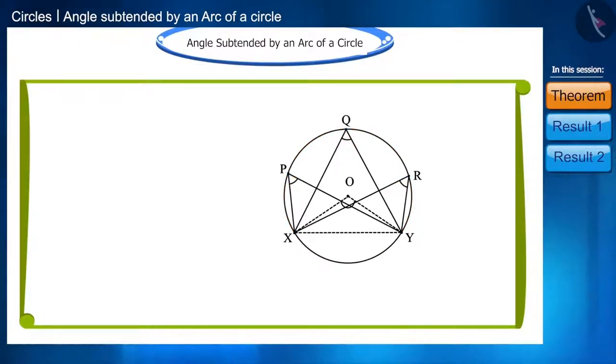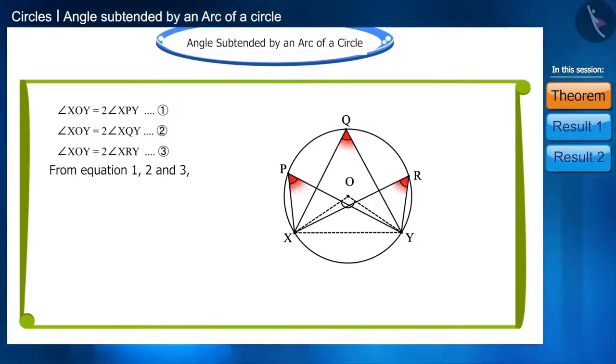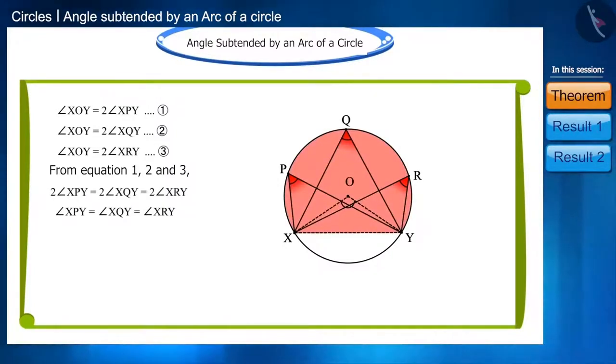So, we can write the angle XOY in this way. Thus, we found that all these angles will be equal. All these angles are located in the same segment of a circle. Therefore, we can say that the angles of the same segment are equal.